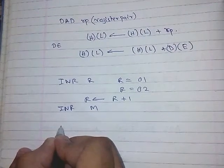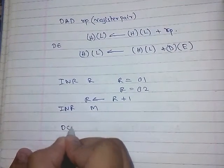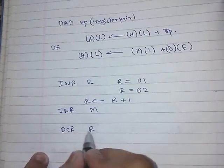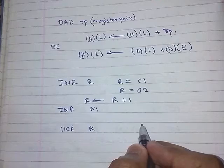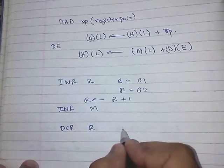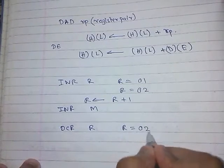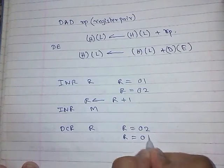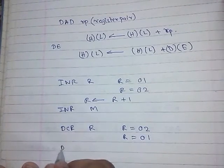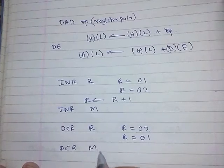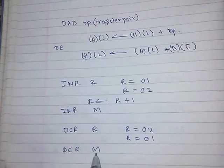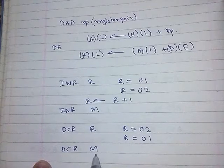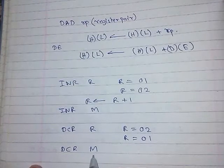Next is decrement: DCR R. This will decrement the register by 1. Suppose R = 02H — after execution of this instruction, it will become 01H. Similarly, DCR M will decrement the memory location by 1.